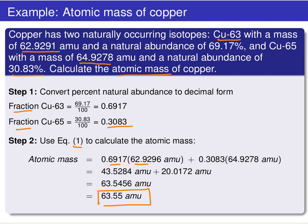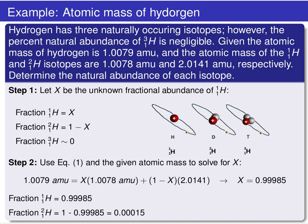Let's do one more example with more than two isotopes. Hydrogen has three different isotopes, so you might think there would be three terms in the sum. However, it turns out that the percent abundance for the third isotope — the one with two neutrons — is negligible. It's so small that it doesn't really make a contribution to the average mass. We can treat the fractional abundance of this third isotope as zero, effectively turning this into a two-isotope problem.